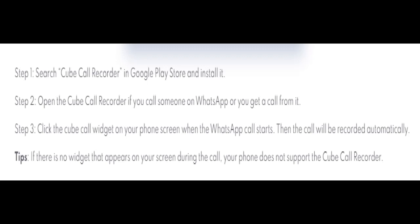Two ways to record WhatsApp video calls on Android. Method 1: Cube Call Recorder. Cube Call Recorder is a useful widget that, once installed and set up, can record any call without setting it in advance, so there is no risk of forgetting to record.